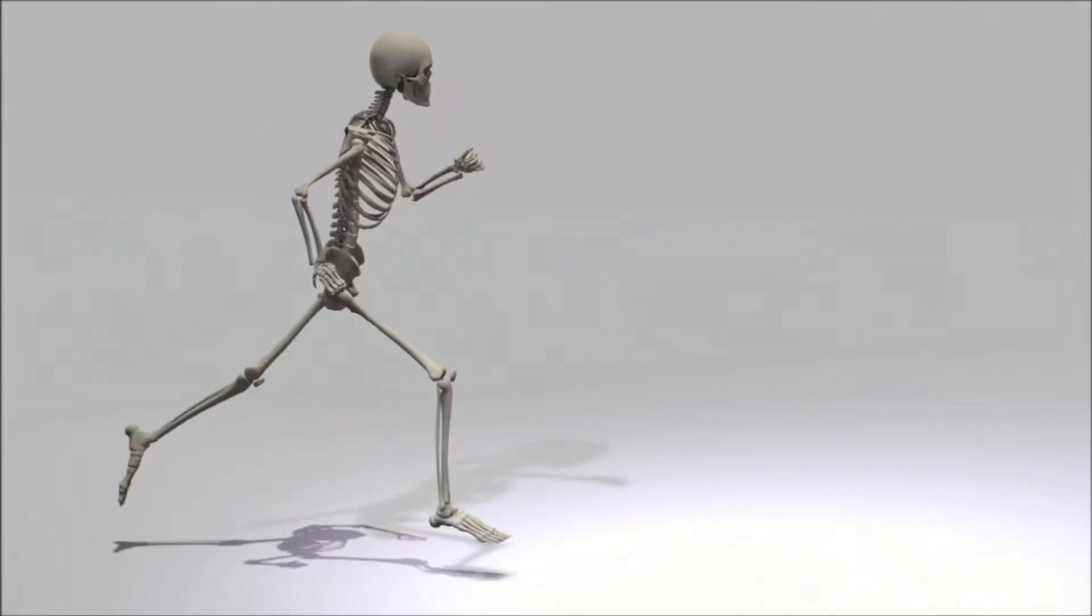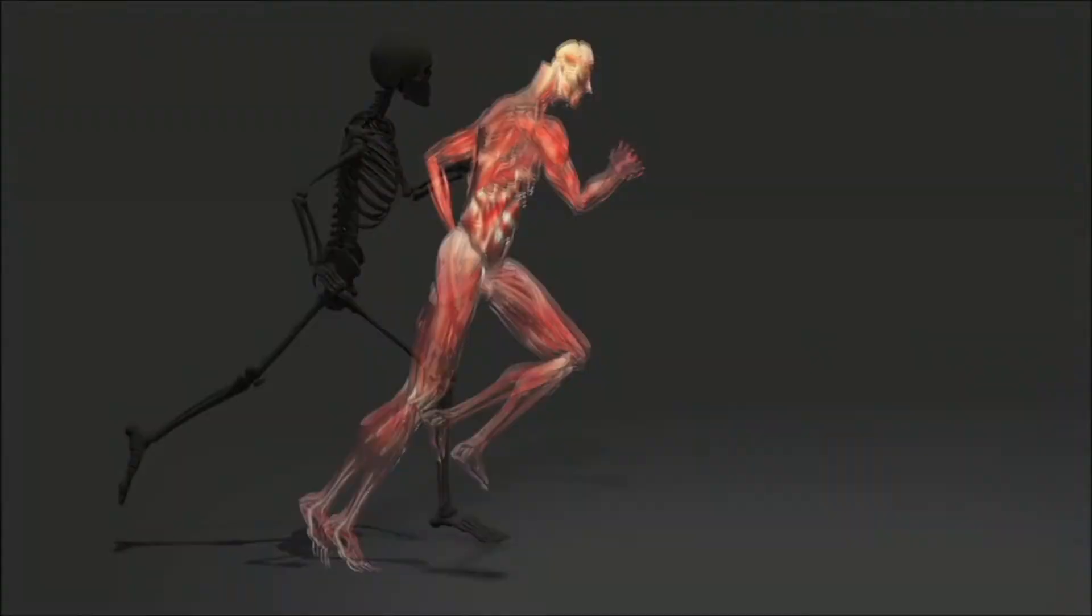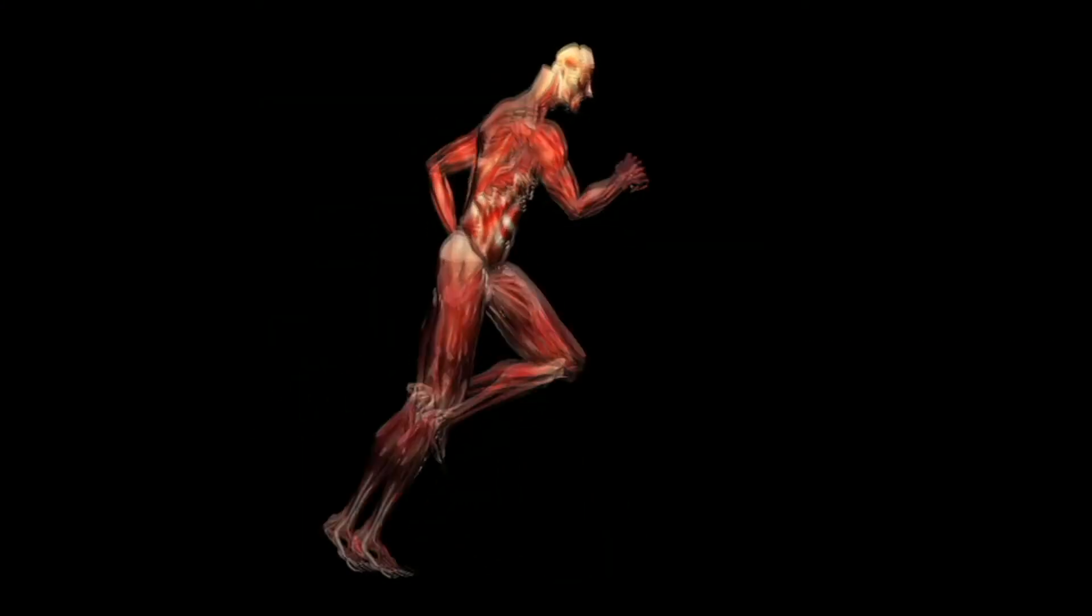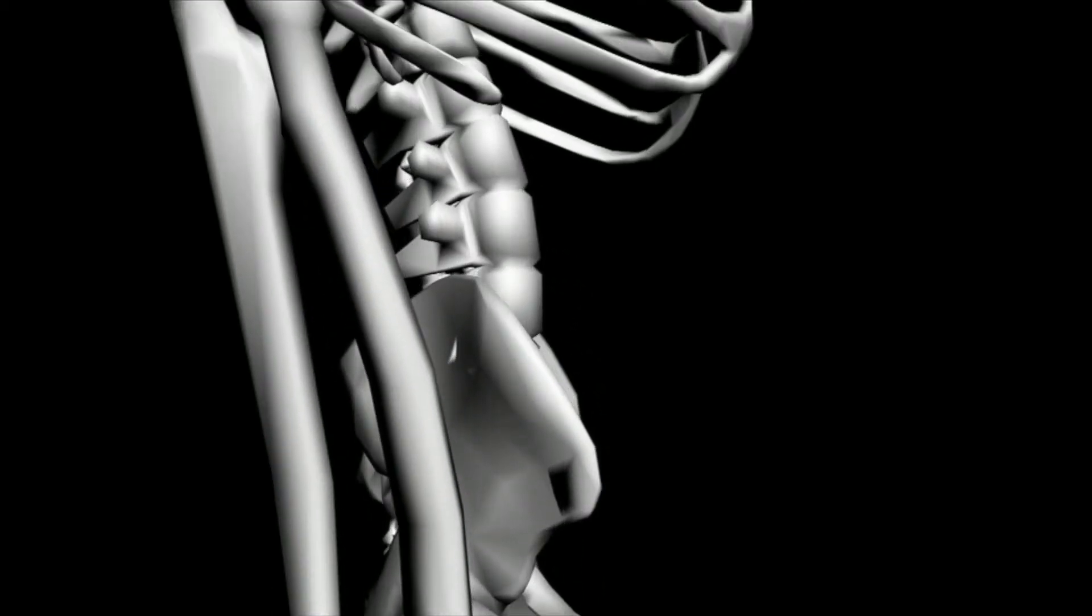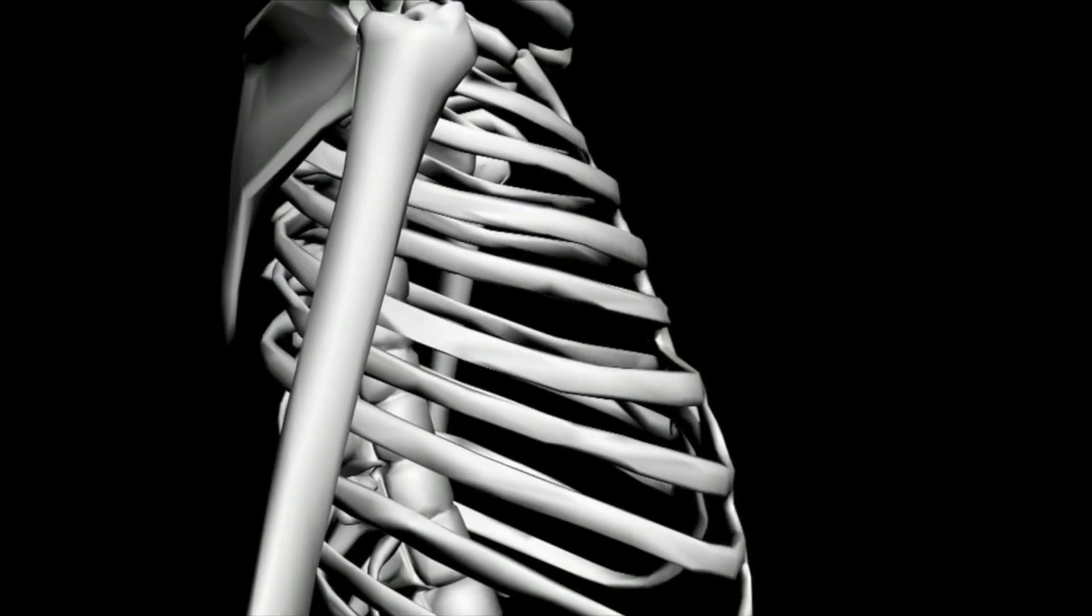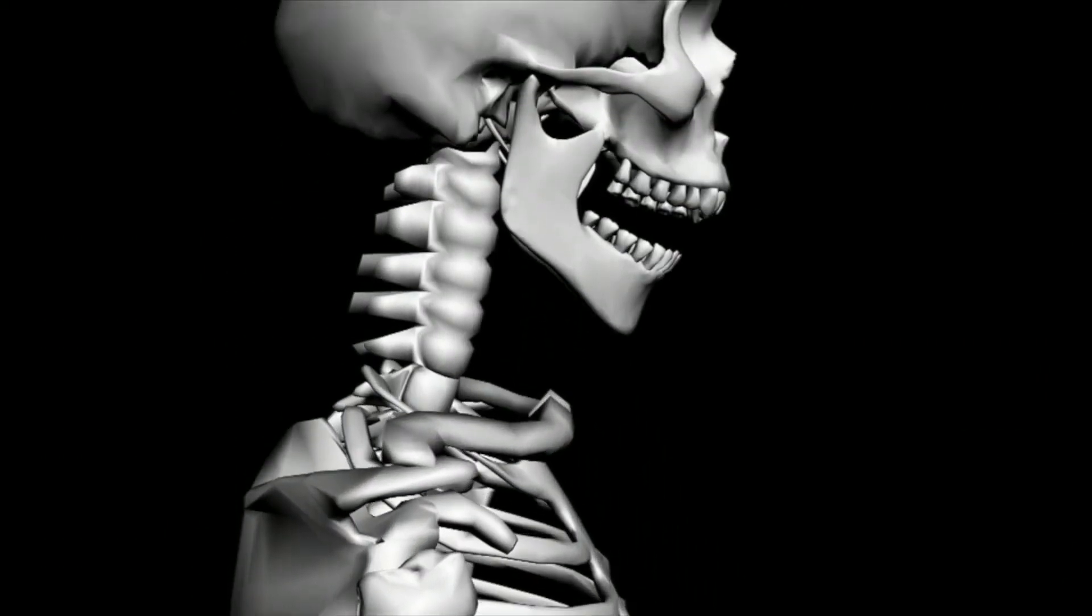The primary function of the appendicular skeleton is movement and support. Muscles attached to these bones move the arms and legs. It's interesting to note that over half of all your bones can be found in your hands and feet. This enables them to move in a wide variety of directions and makes them the most flexible parts of the body.